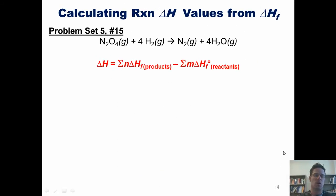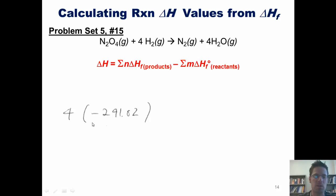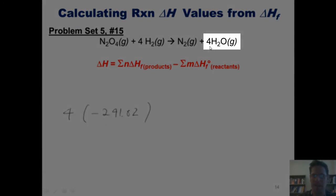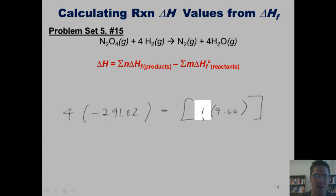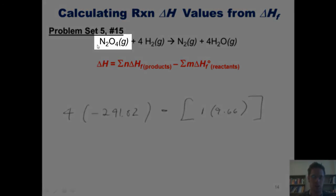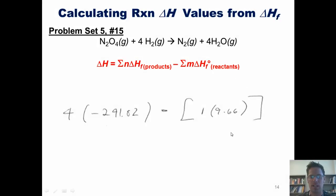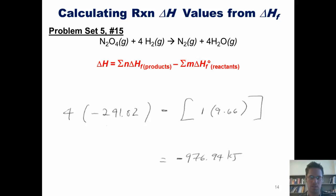I throw everything into the equation, beginning with the enthalpies of formation of my products — gaseous water, negative 241.82, multiplied by 4 because of the coefficient of 4 in front of H2O. I then subtract the overall enthalpies of formation of my reactants: the enthalpy of formation of H2 is zero, and the enthalpy of formation of N2O4 is positive 9.66, multiplied by 1. Subtracting the combined enthalpies of reactants from the combined enthalpies of products, the final answer comes out as negative 976.94 kilojoules — the same as the long way.